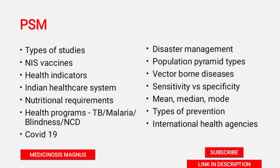Know sensitivity and specificity and how to find them for a disease. Know about mean, median, and mode and how to solve mathematical questions based on these. Learn about the types of prevention — primary, secondary, tertiary, and primordial. Know about international health agencies, where their headquarters are located, and the programs they are sponsoring.